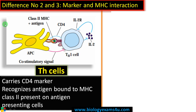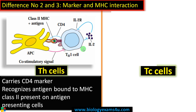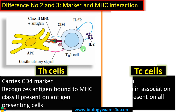MHC class 2 receptor is present only on antigen presenting cells like B cells, macrophages, and dendritic cells. These antigen presenting cells engulf antigen, process it inside, and present it on MHC class 2. This MHC class 2-bound antigen is then recognized by T helper cells.